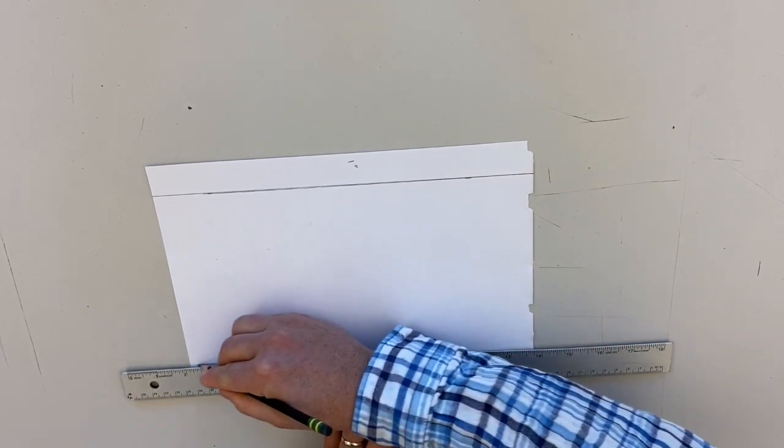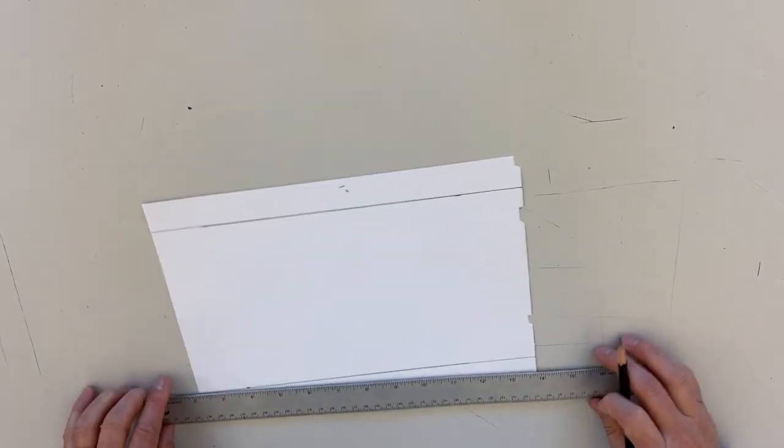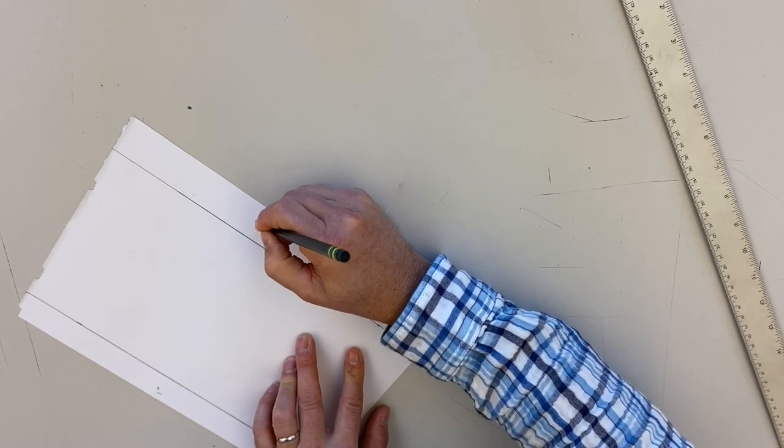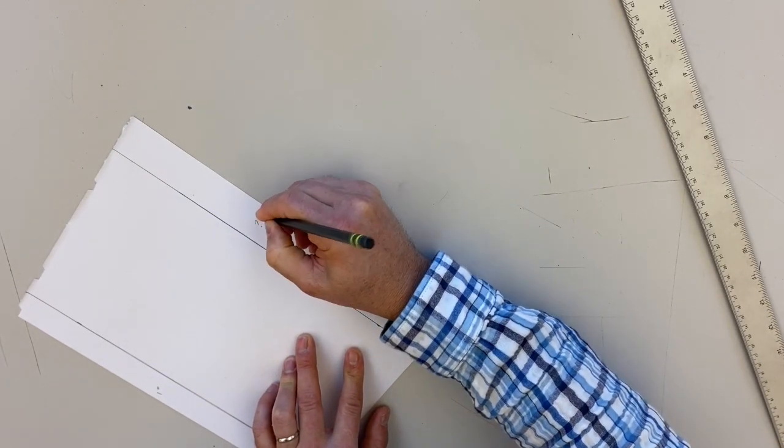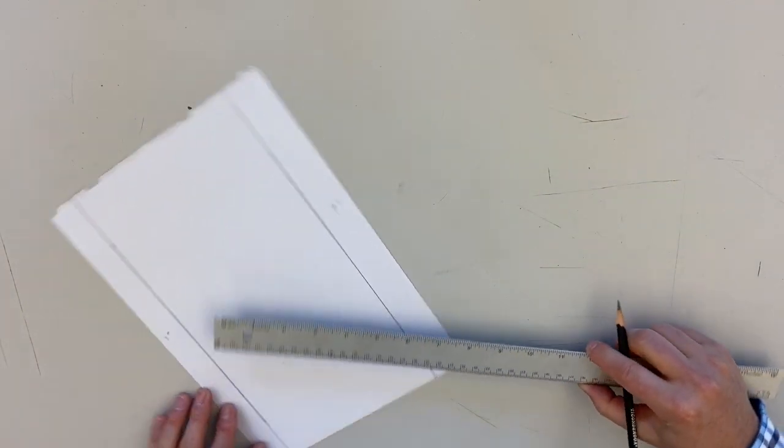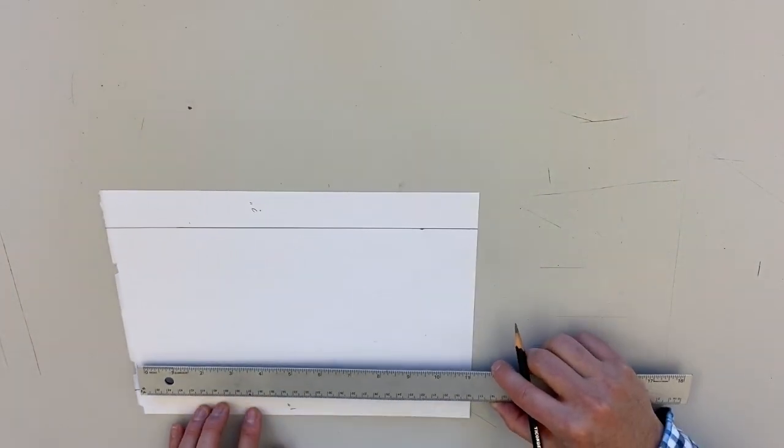But we don't know how big that border is. It's just whatever's left. So we're not measuring from the right hand side of the paper for that one. We're just measuring 6 inches across because we're making a 6 by 9.